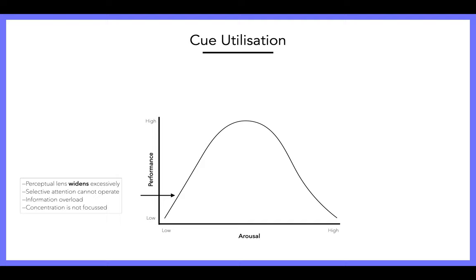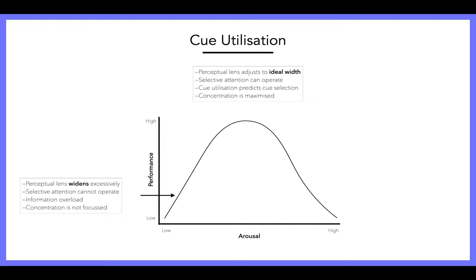As we move up the graph, we get to that optimal arousal — a moderate level — which gives us our highest performance. What this suggests is our perceptual lens adjusts to the ideal width, so selective attention can operate and we can focus on the task-relevant cues. Cue Utilization predicts cue selection — focusing on task-relevant cues and acting accordingly. Concentration is maximized and you are focused on the task at hand.